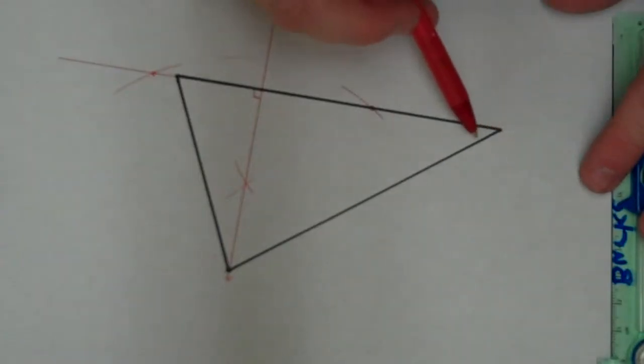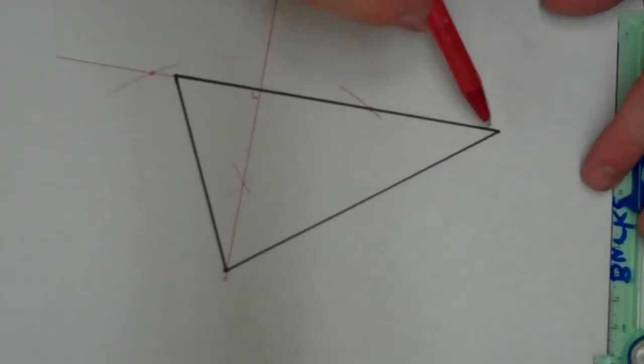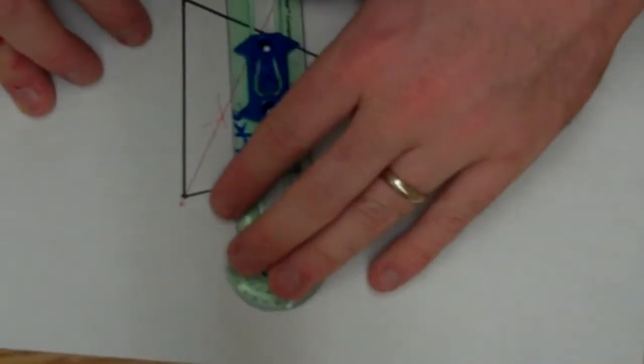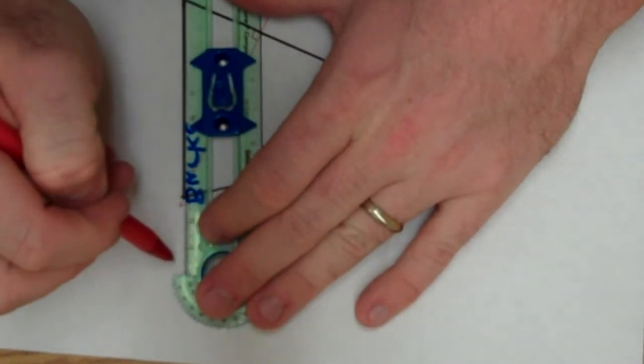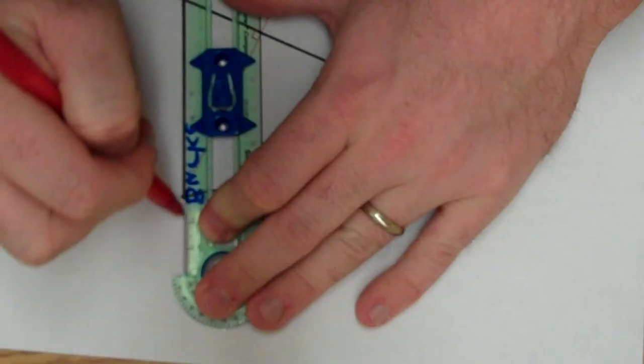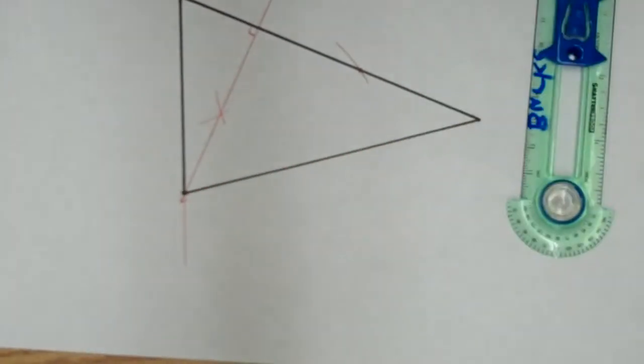So now what I need to do is I'm going to draw another altitude going in this direction right here. So again, I'm going to extend this line a little bit so I have a little bit more room to work with. Whenever you're doing a construction, you're always allowed to extend lines if you need to.